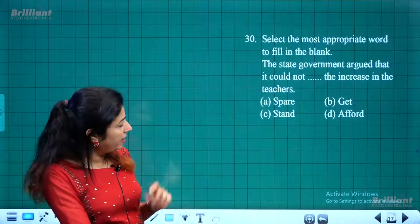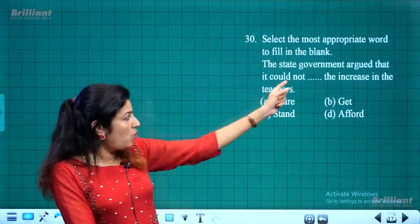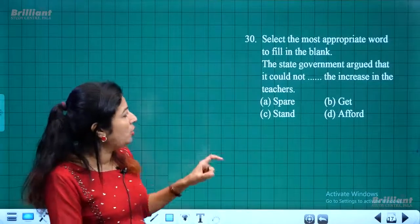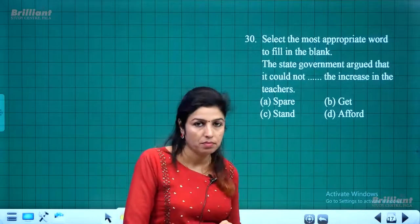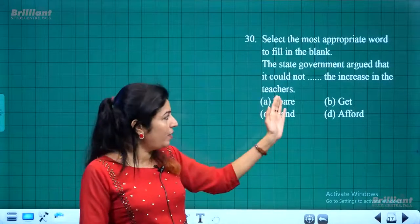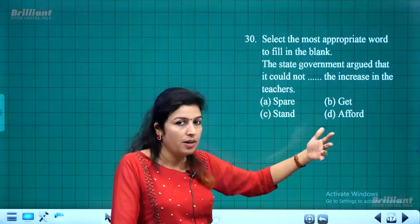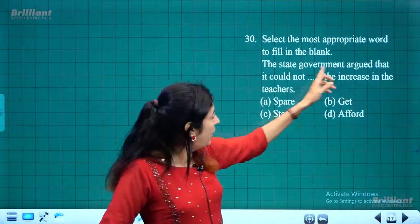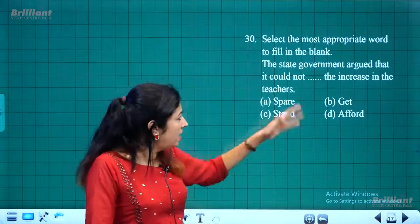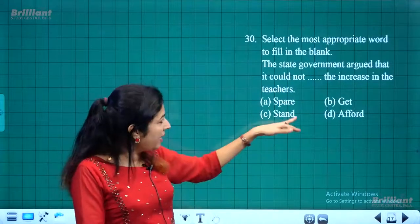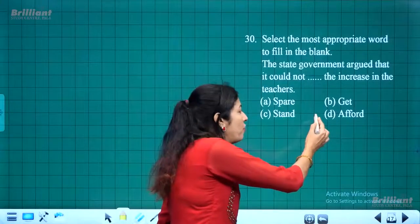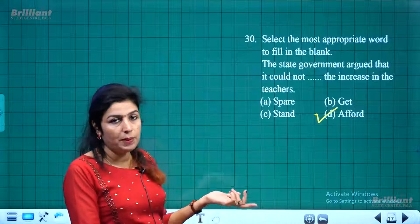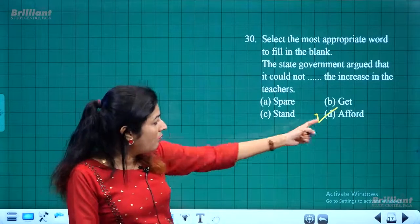Fill in the blank: 'The state government argued that it could not [blank] the increase in the number of teachers.' Options: spare, get, stand, afford. 'Spare' and 'stand' don't fit. 'Afford' is correct — if teacher numbers increase, the government cannot afford to pay their salaries. So the answer is 'afford.'